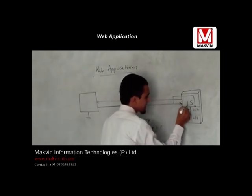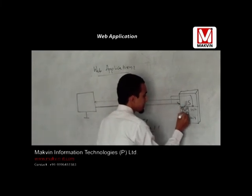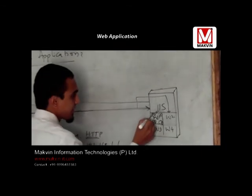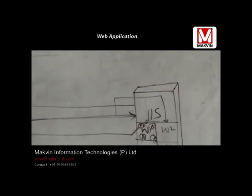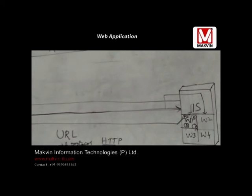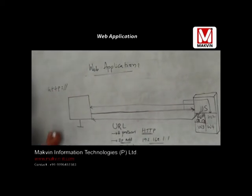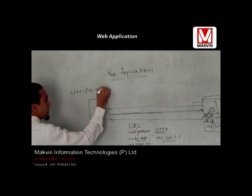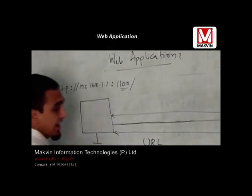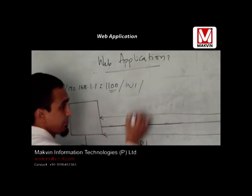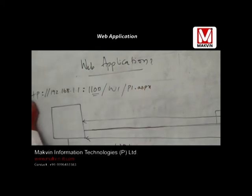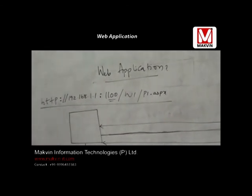This web application may contain multiple pages — P1, P2, P3, P4. To access a specific page, say P2, I give that with the help of a file name. Putting it all together, my complete URL looks like: HTTP://192.168.1.1:1100/W1/T1.aspx — where the extension .aspx is used if developed with .NET. Using this URL, I will be accessing my web page.